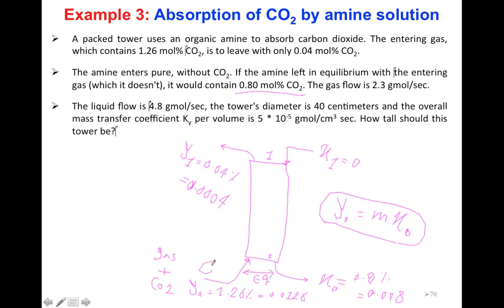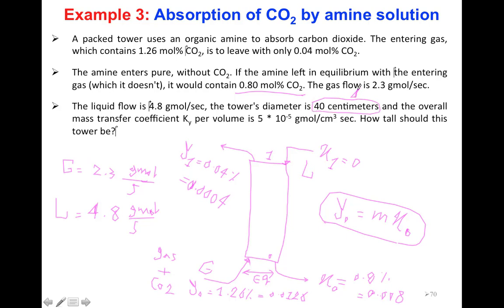The gas flow rate G is 2.3 gram-mole per second. The liquid flow rate L is 4.8 gram-mole per second. The tower diameter is given as 40 centimeters. The overall mass transfer coefficient Ka is also given as 5 times 10 to the power... and we need to find how tall this tower should be.